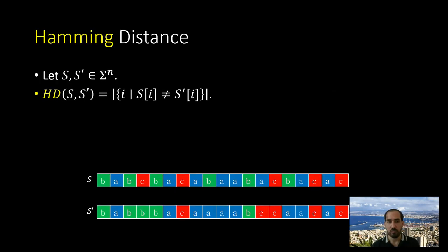First of all, let's define what a Hamming distance is. For two strings of the same length, s and s', the Hamming distance between s and s' is the number of positions where s and s' have different characters at the same position. For example, in this slide the Hamming distance between the two strings is 4.